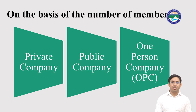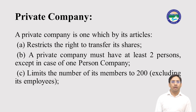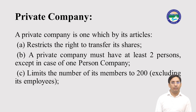Now, on the basis of number of persons: we can segregate companies based on how many persons are members or shareholders. The first one is private company. A private company is one which, by its articles, restricts the right to transfer its shares. Under private companies, at least two persons are required — the minimum is two persons. And the maximum number of members is two hundred.